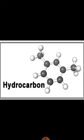Saturated hydrocarbons, like alkanes, have no double or triple bond — only a single bond is present between carbon atoms. Unsaturated hydrocarbons are those in which there is unsaturation, meaning multiple bonds are present between carbon-carbon atoms.